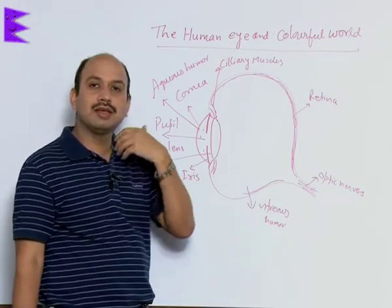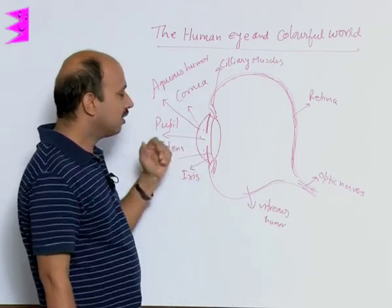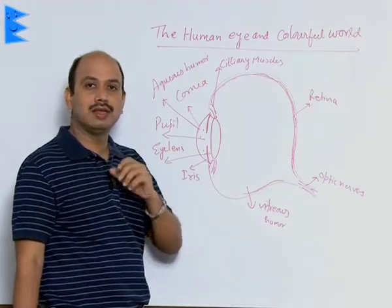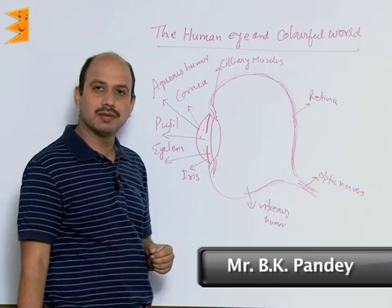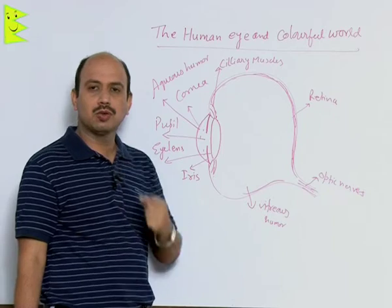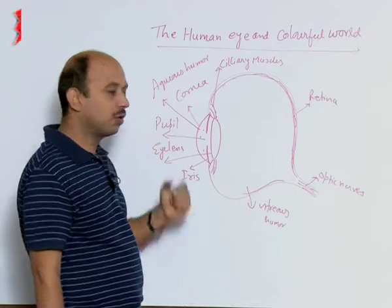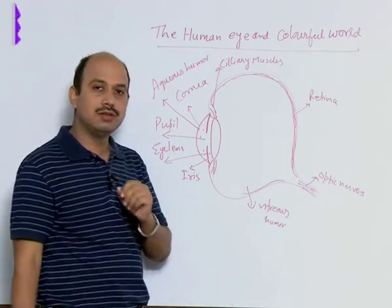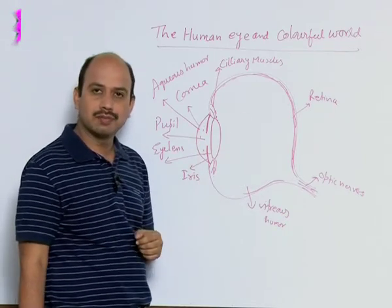Suppose you are looking at an object very far away — the ciliary muscles are relaxed, the lens becomes thin, its focal length increases, and the image is formed on the retina. When you are seeing a very nearby object, the ciliary muscles change the curvature of the lens; the lens becomes thick, focal length decreases, and the image is finally formed on the retina.